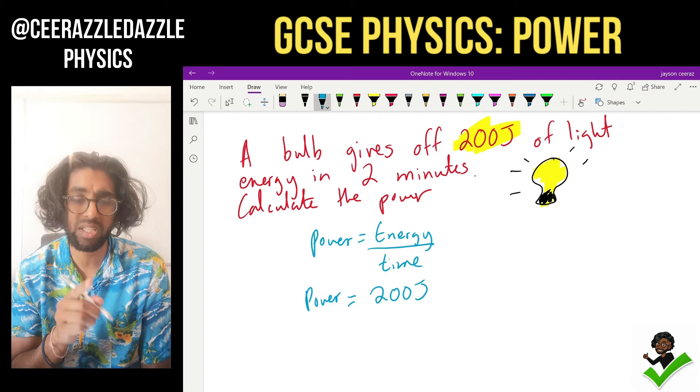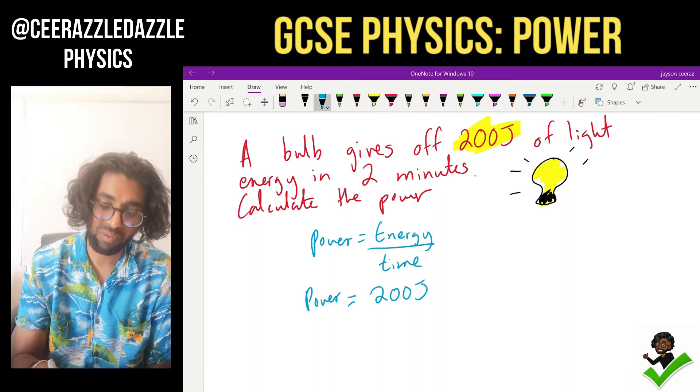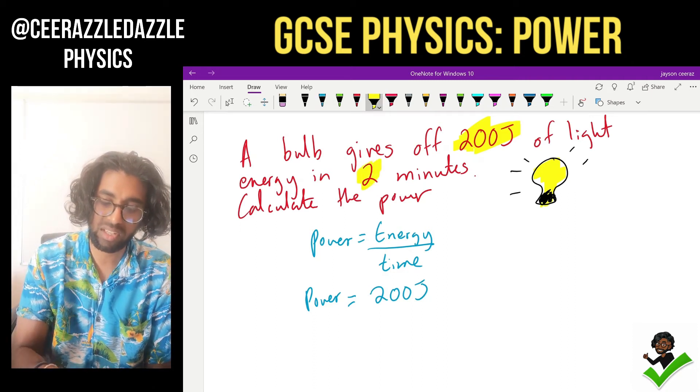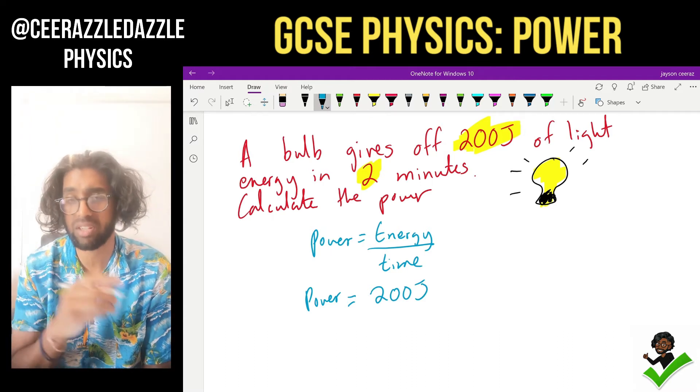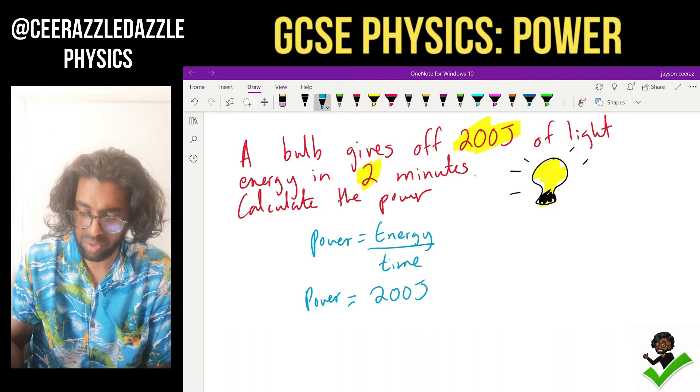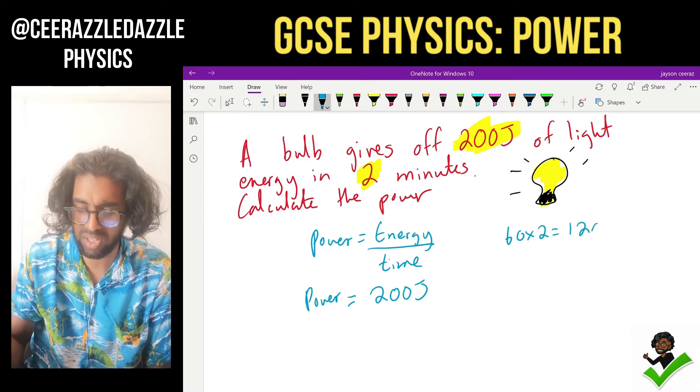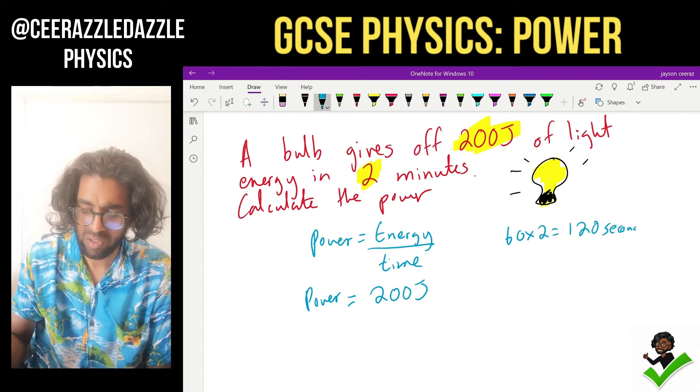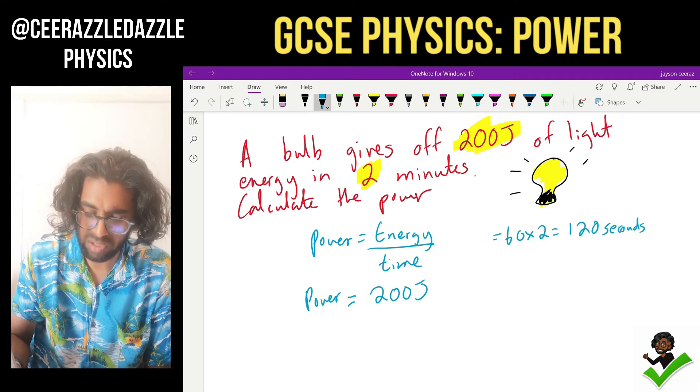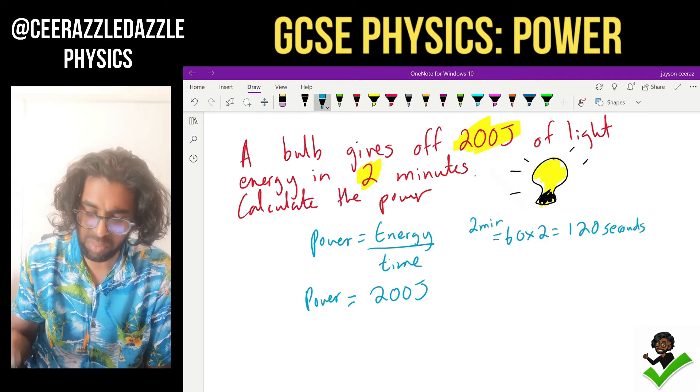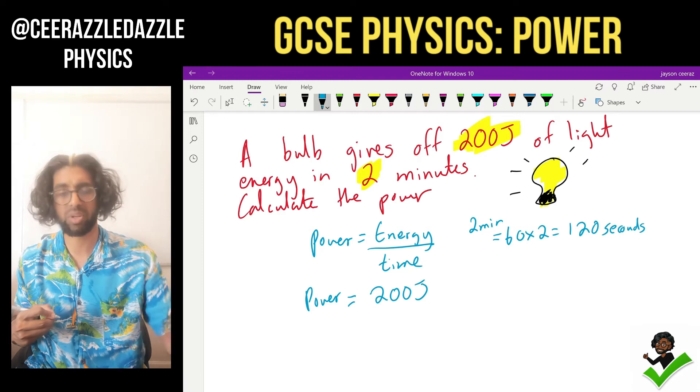We can't use minutes because the formula needs to be in seconds. So we must convert the two minutes into seconds. So how many seconds are there in two minutes? It's going to be 60 times by two. Therefore, it's 120 seconds. That's going to be two minutes.